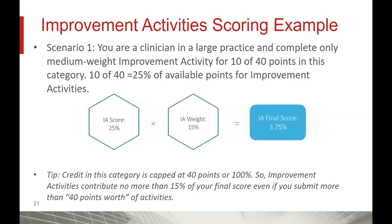In scenario one, you're a clinician in a large practice and complete only one medium-weight improvement activity for 10 of the 40 points in this category. So 10 of 40 is 25% of the available points for the improvement activity. You then multiply that by the weight given for the improvement activity as a percentage of your total performance score, and you see that your improvement activity final score is 3.75%.